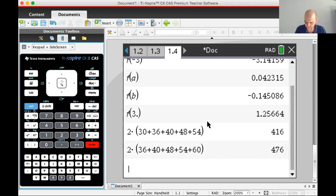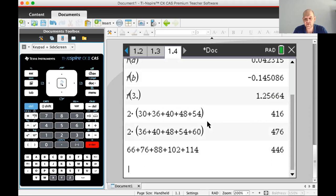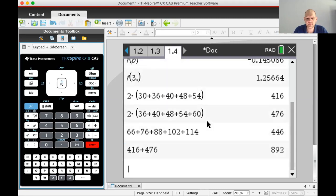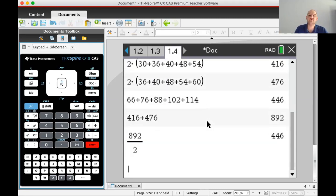All right let's do the next one. So the next one, what I can do: take this, knock out the 30 because that was a left endpoint, and add in the 60 which is the final right endpoint. So you get 476 feet. And then for the last one it's one half times two, and then 66 plus 76 plus 88 plus 102 plus 114. Okay, 446, so equals 446 feet.